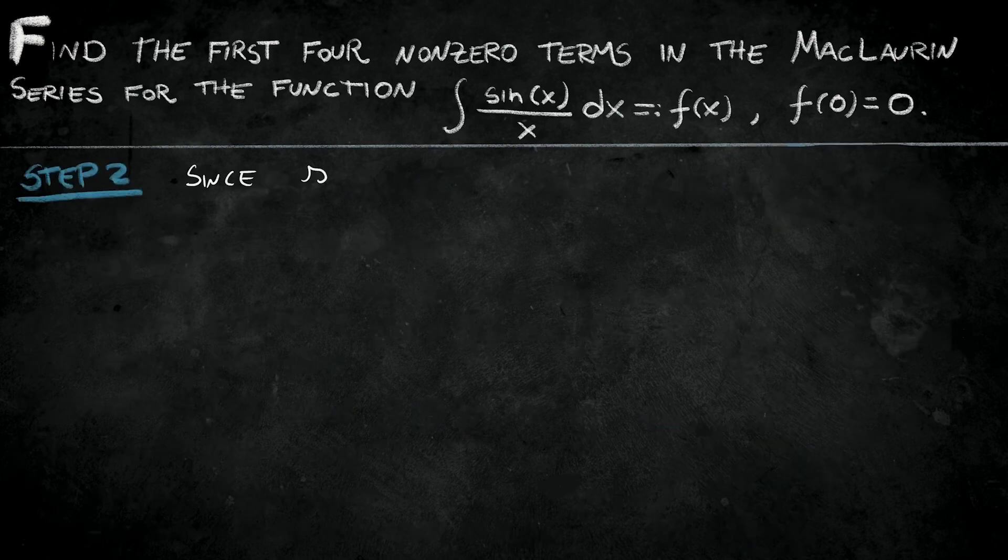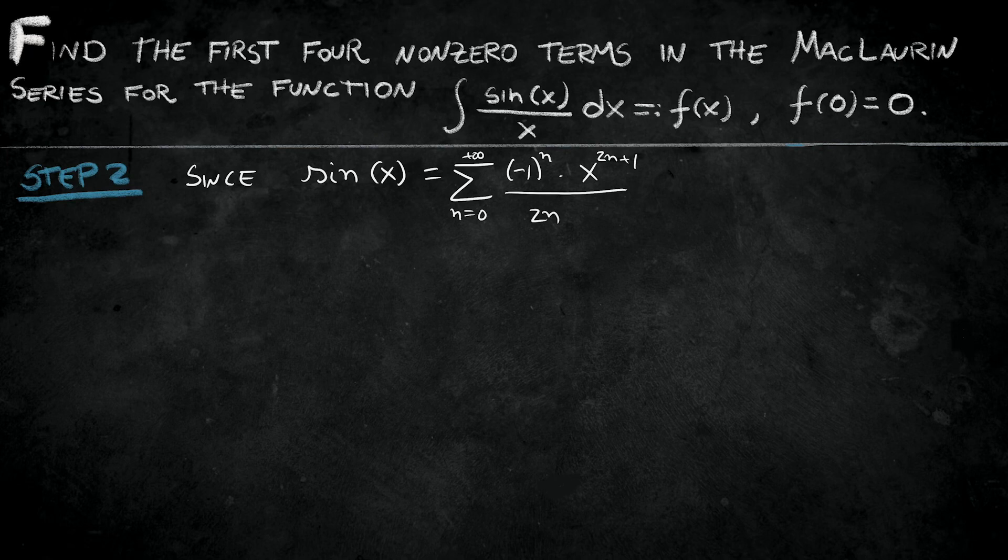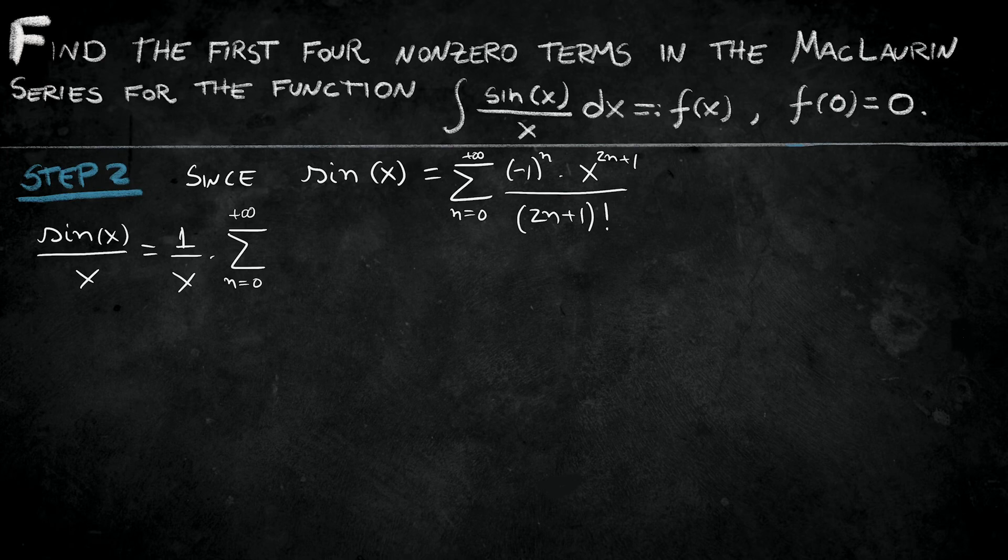When I have odd derivatives, I'm alternating between 1 and minus 1, so I have to alternate my sign. So it explains why we have the series like that. Let's move to step 2. Since sine of x is written as the way that we found, let's divide by x both sides. Dividing by x,